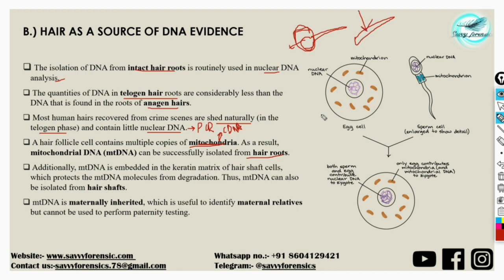If no root is present, the hair shaft itself can be used for DNA analysis. Mitochondrial DNA is embedded in the keratin matrix of the hair shaft's cortex layer. This keratin matrix protects the mitochondrial DNA molecules from degradation, allowing extraction and identification even from rootless hair shafts.